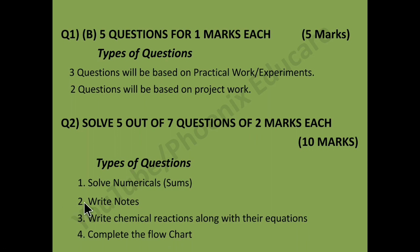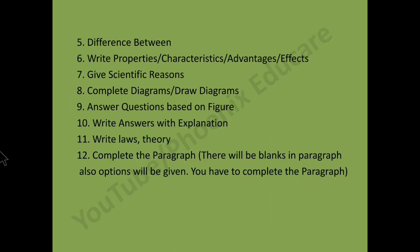Fourth type for Question 2 is complete the flow chart. Fifth is difference between two components — for 2 marks you need 4 points, 2 for each component. Sixth is write properties or characteristics of something.